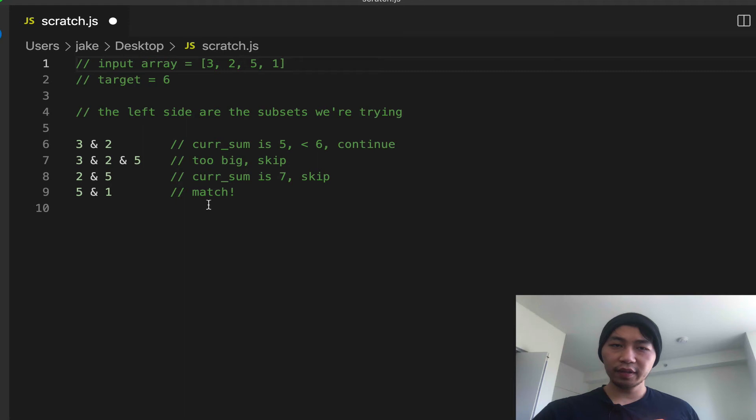So one thing to notice here is that subarrays can be parts of larger subarrays. And knowing that 3, 2 is part of 3, 2, 5, lets us play with the fact that 5 is this dangling extra element between 3, 2, and 3, 2, 5. But the intuition comes when you realize that the difference between this subarray sum and this subarray sum is 5 itself.